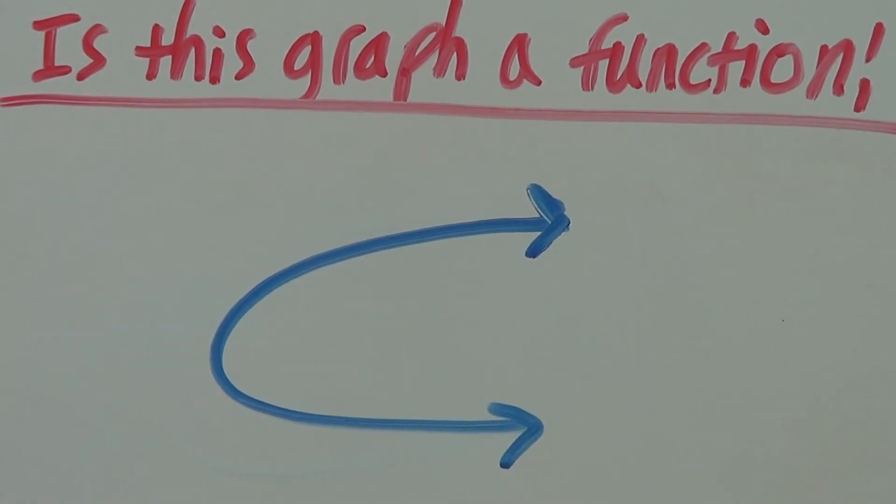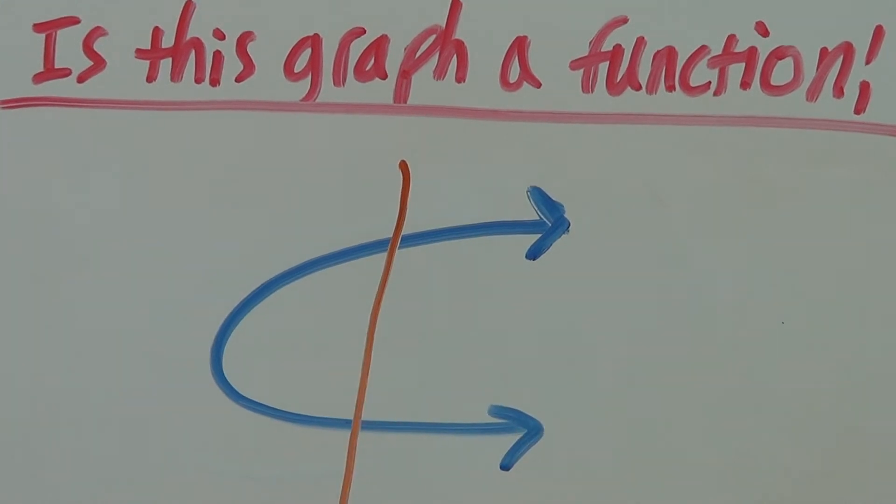On the other hand, if we use the Vertical Line Test here, we can see there are two intersections meaning this graph is not a function.